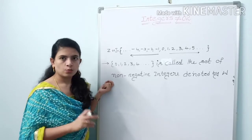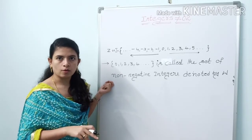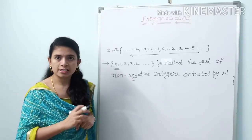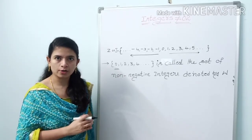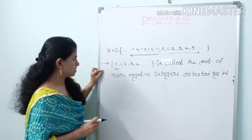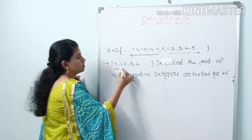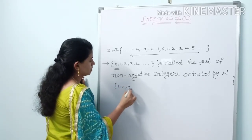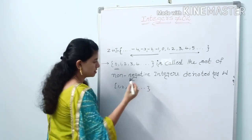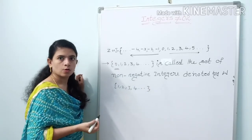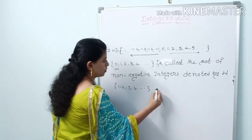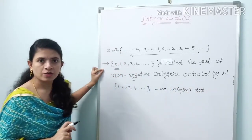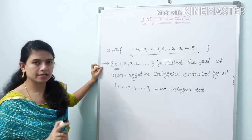But are these positive integers? No. Why? Because 0 is there, and 0 is neither positive nor negative. So if 0 is not there, we call it positive integers. If 0 is there, we call it non-negative integers.